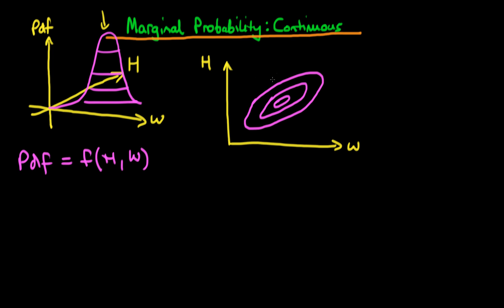This is a representation of our PDF in contour form, but how can we use this PDF to get a marginal probability? If we wanted to get the marginal probability — let's call it f of h — remember what we had to do in the discrete form: we had to sum over all possible values of the other discrete random variable. In the continuous case, a sum becomes an integral. For every value of height, we could slice through this image and measure the length of that line, taking into account that we're actually having to go up and down.